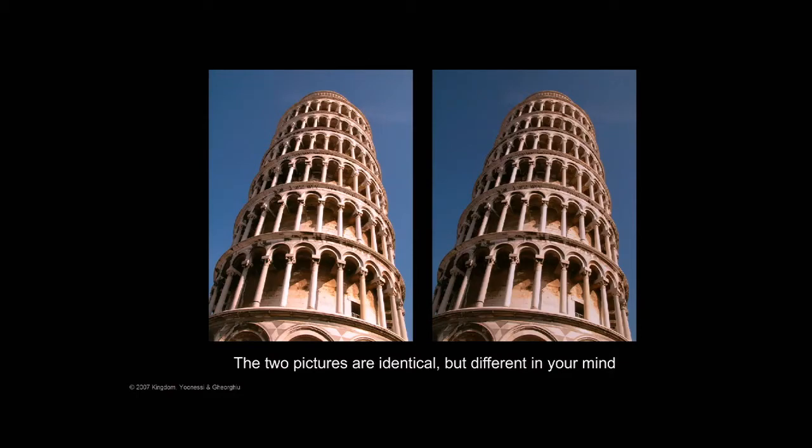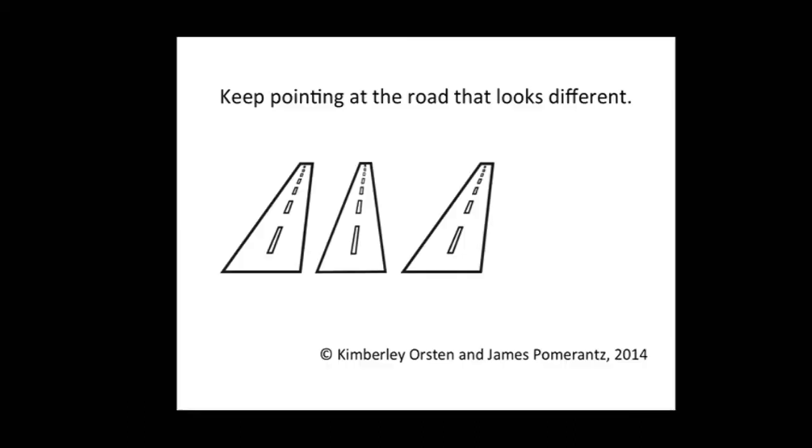Now, what would happen if we took this and instead of doing it as a tower, we did it as, say, some roads going off into the distance? I'm going to show you three, and what I want you to do while you're looking at this is point with your hand, put your hands out now so you can do this, point at the one on the screen that's different from the other two. Like that one right there. But now, whoop, you're pointing at the wrong one.